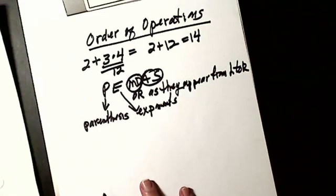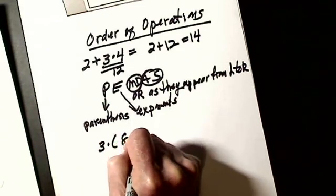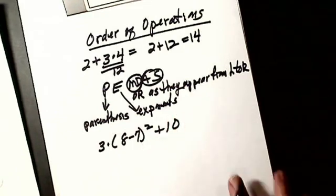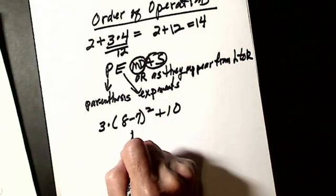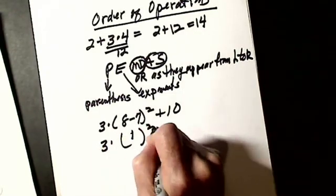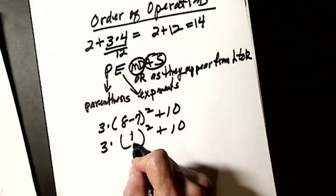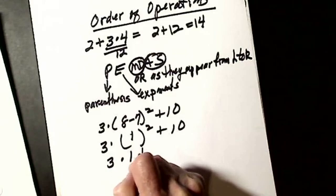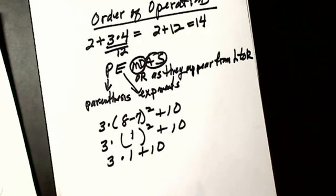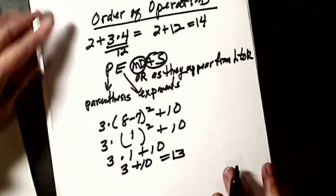Let's do a bigger one: 3 × (8 − 7)² + 10. Order of operations says do what's in parentheses first: 8 − 7 = 1. Then exponents: 1 squared is 1 × 1 = 1, not 2. So I have 3 × 1 + 10. Multiplications and divisions next: 3 × 1 = 3. Then 3 + 10 = 13.